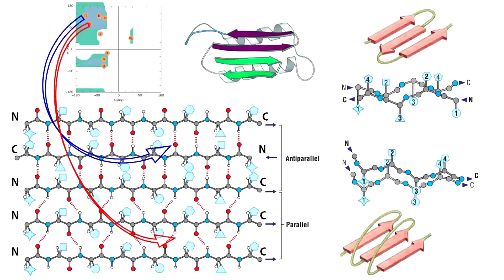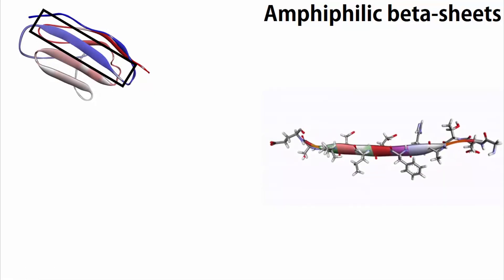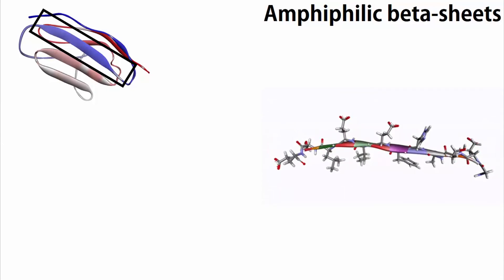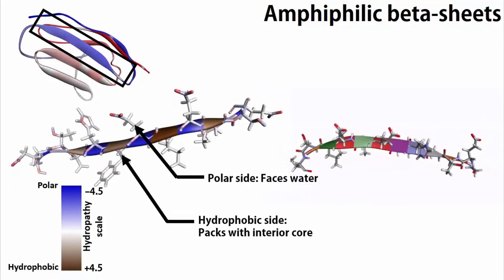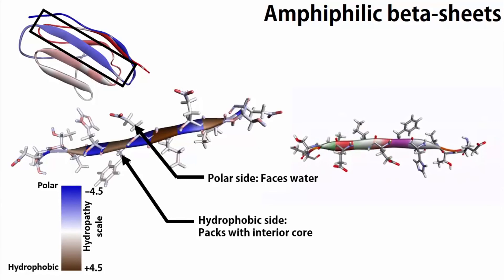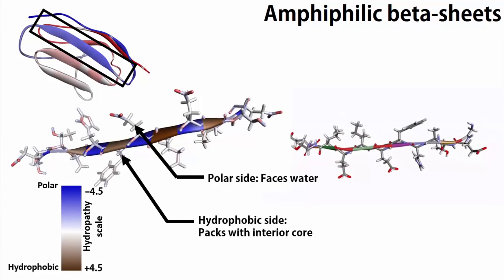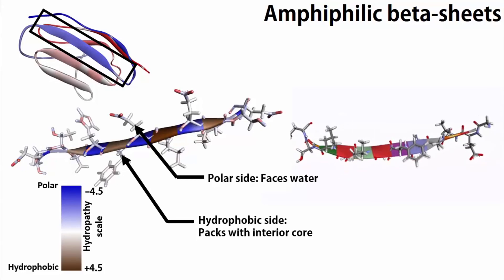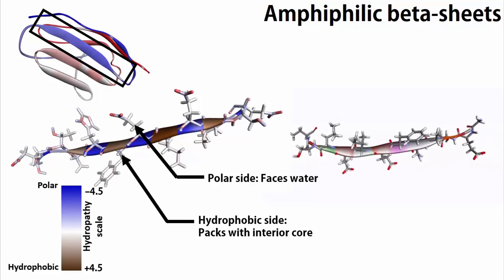Anti-parallel strands are more stable because their inter-sheet main chain hydrogen bonds are more linear in nature. Like alpha helices, beta strands can be amphiphilic as well. Since in beta sheets the side chains of two successive amino acids point in opposite directions, a stretch of alternating hydrophobic and hydrophilic residues can generate an amphiphilic beta strand. Such strands are observed at the protein surface with the hydrophobic phase covering the protein core and the hydrophilic phase facing the bulk water.